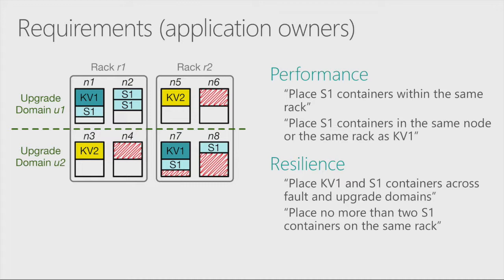What does an application owner want when scheduling these applications? First, application owners care about performance. We want support for something like: place all S1 instance containers within the same rack, or place all S1 containers in the same node or rack with the key-value store they are reading data from. Apart from performance, we also care about resilience — for example, placing KV containers across different fault and upgrade domains so that in case of failure, recovery is faster.